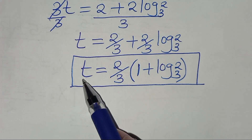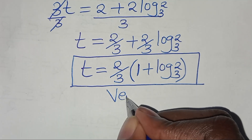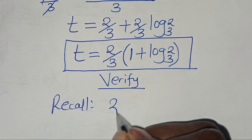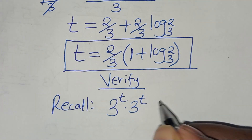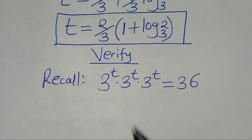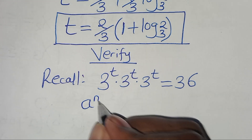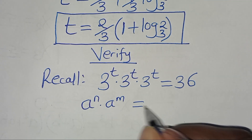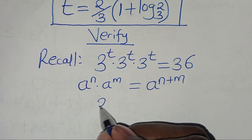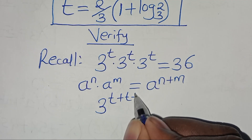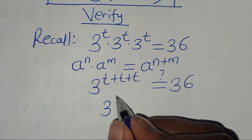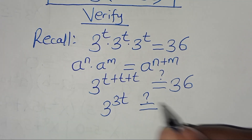The next step is to verify that this value of t satisfies the equation. Recall we have 3 to the power of t, times 3 to the power of t, times 3 to the power of t, and this is supposed to give us a value of 36. Applying the exponential property, this implies we have 3 to power t plus t plus t, equal to 36, which is 3 to the power of 3t. This should give us a value of 36.